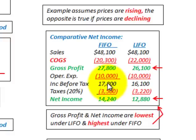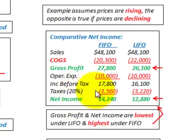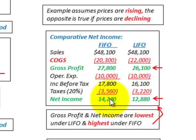We need to know our income before taxes to determine our tax amount. Subtracting cost of goods sold and operating expenses from gross profit gives us income before taxes, which is higher under FIFO than LIFO. Applying a 20% tax rate and subtracting taxes from income before taxes, we get net income: FIFO at $14,240 versus LIFO at $12,880.